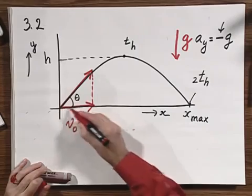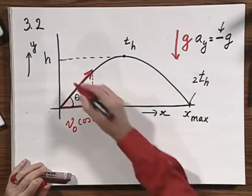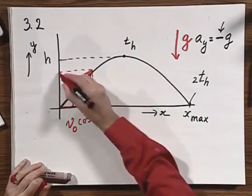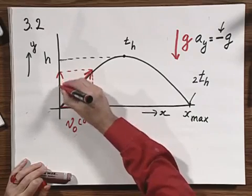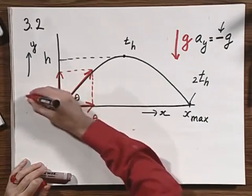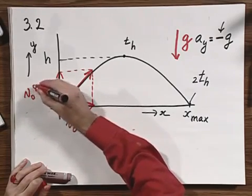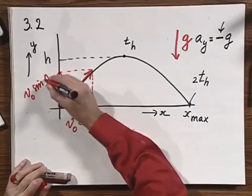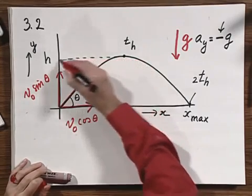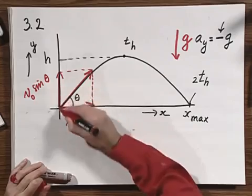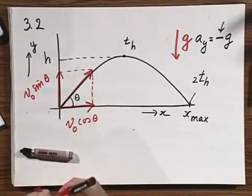The velocity in the y direction, which starts off at v zero sine theta, does change. It comes to a hold here, zero, and then it increases and it reverses direction.